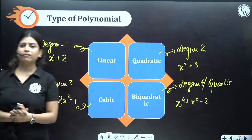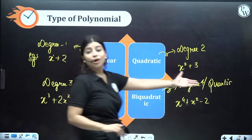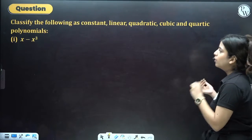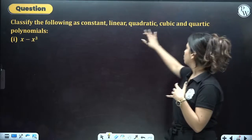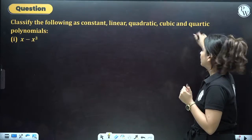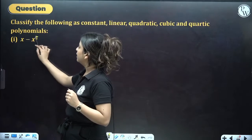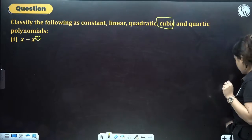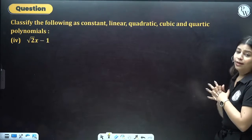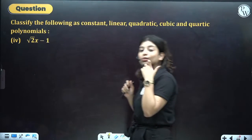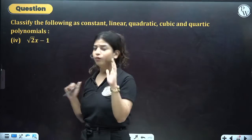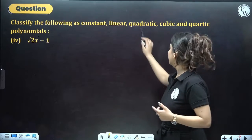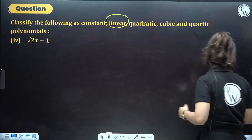Based on the question, we need to classify polynomials as constant, linear, quadratic, cubic, or quartic. Since the highest degree here is 3, this will simply be a cubic polynomial. The next expression is √2·x — where √2 is the coefficient, so we do nothing with it. The power of the variable is 1, so it will be a linear polynomial.